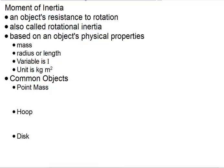Mass is an object's resistance to linear motion. Moment of inertia, also known as rotational inertia, is an object's resistance to rotation.